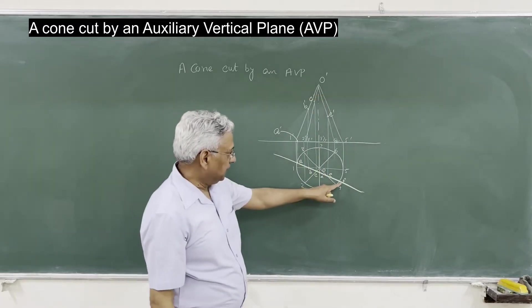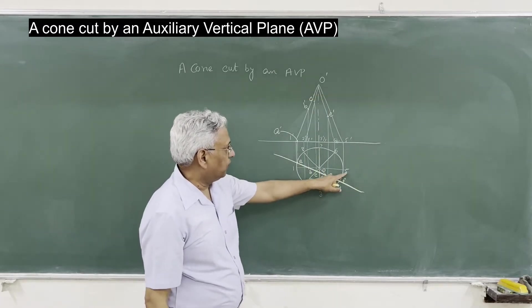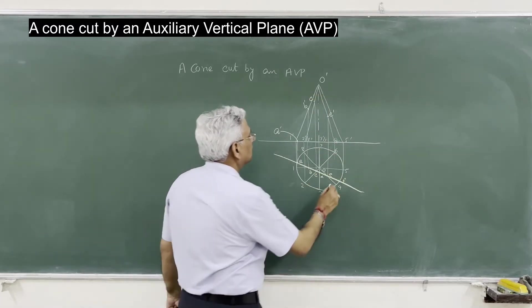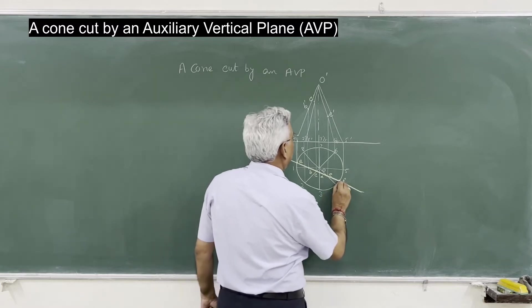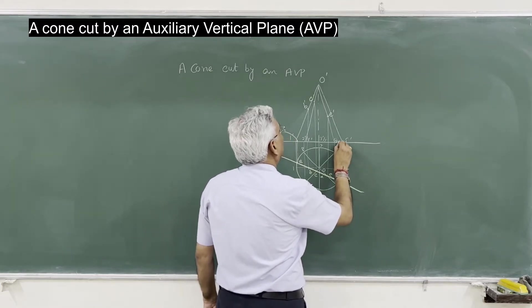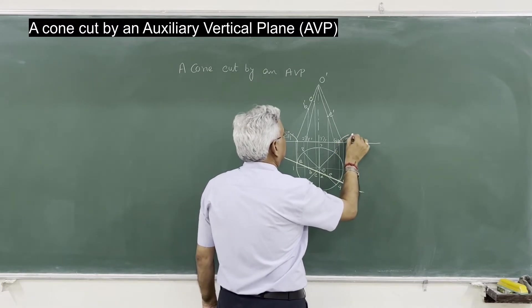And F is on 4-5; 4-5 is the base, so you get a point on 4-5, and this point is F.